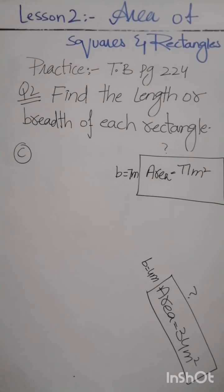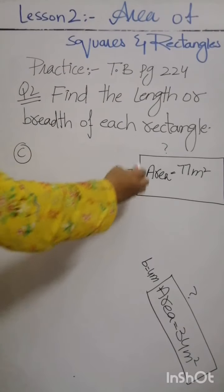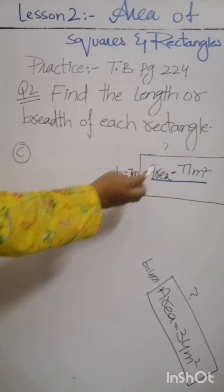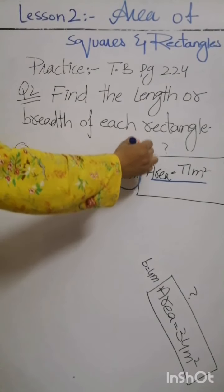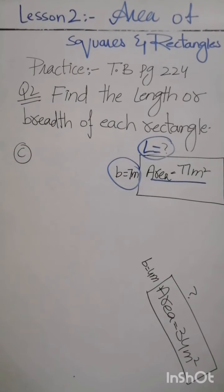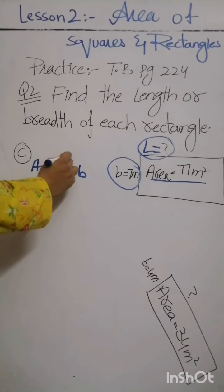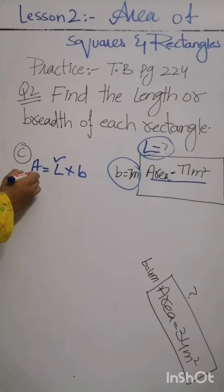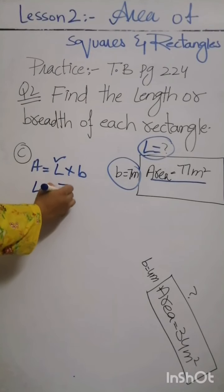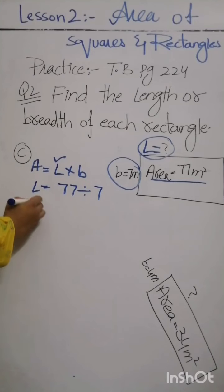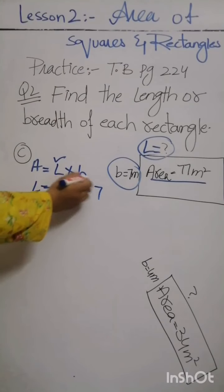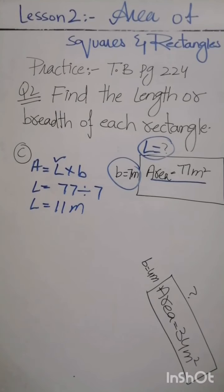Now we have part c. The area of the rectangle is 77 meter square and its breadth is given; we have to find the length. We write the formula: area is equal to length multiplied by breadth. Since length is missing, we divide area by breadth. Length is equal to 77 divided by 7, which gives 11 meters.